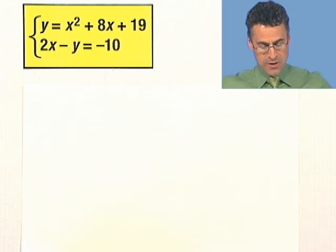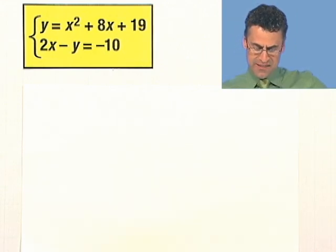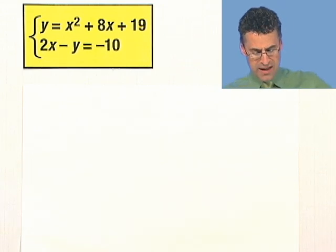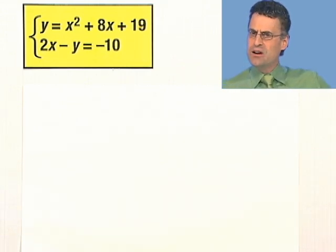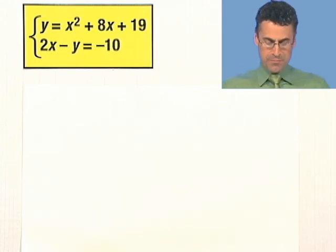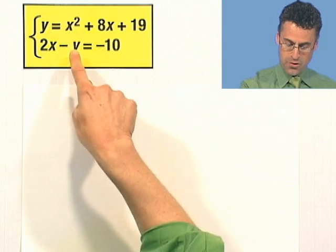Let's take a look at another example of a nonlinear system, and this one's going to look a little bit weird. The first equation is y equals x squared plus 8x plus 19, and the second one is 2x minus y equals negative 10. You could solve this by substitution if you want, plug all that stuff in for the y if you want. Let me show you a different way, which is called elimination.